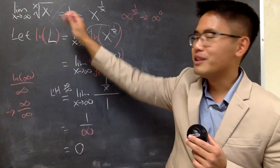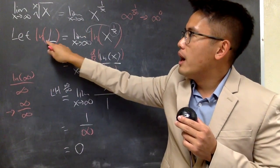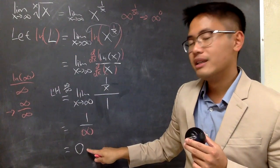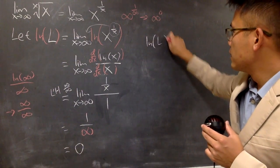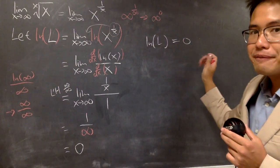But, 0 is not the answer to this. Because, we said ln L is 0. I had to find out what L is. So, of course, you can just say, okay, this is what we have.